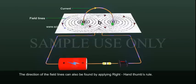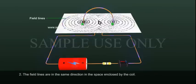The direction of the field lines can also be found by applying right-hand thumb rule. The field lines are in the same direction in the space enclosed by the coil.